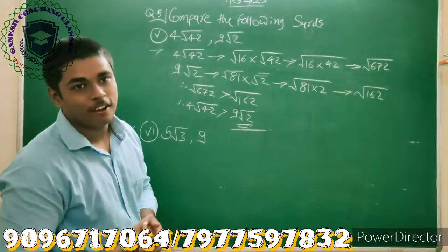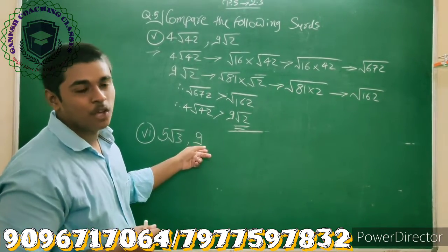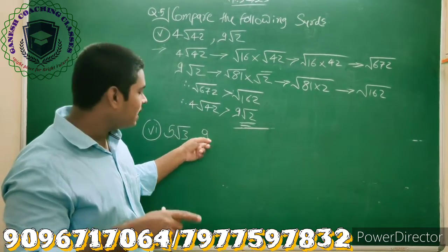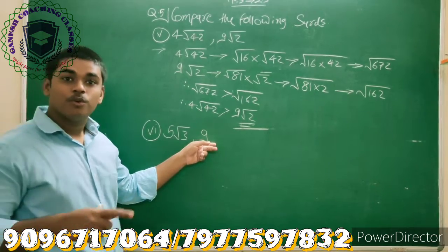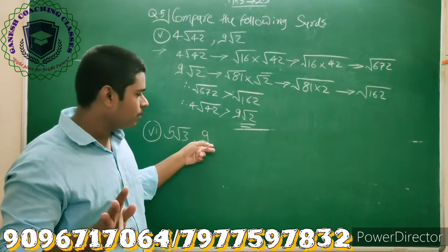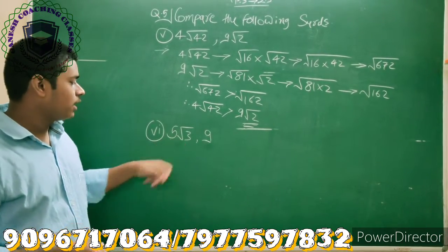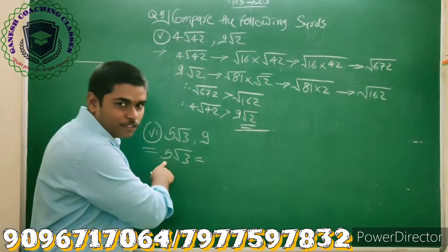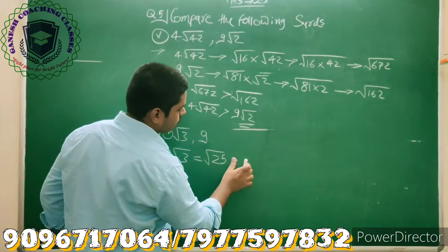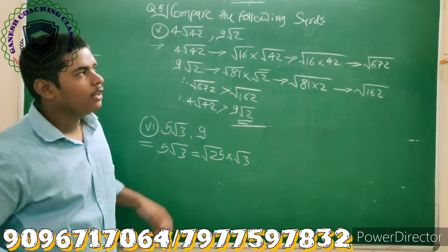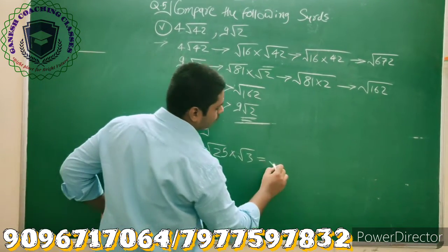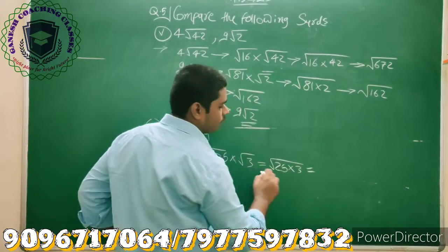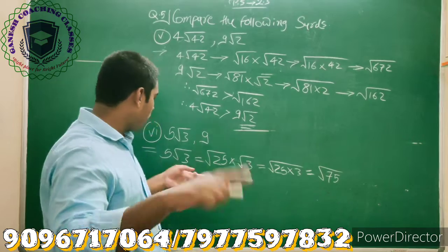Question number 6: we have given 5√3 and 9. The second number does not contain a root, so we treat 9 as a coefficient. We need to convert into radicand form. For 5√3: 5 can be written as √25. So √25 × √3, combining gives √(25×3) = √75. For 9: 9 can be written as √81. Now, which is greater, 81 or 75? Clearly 81 is greater than 75.